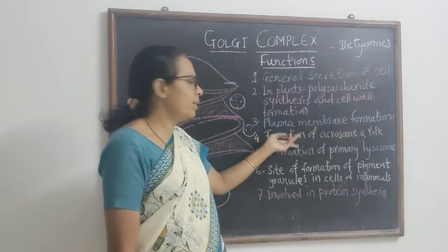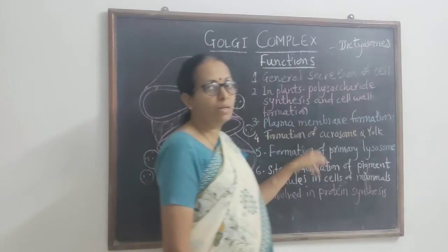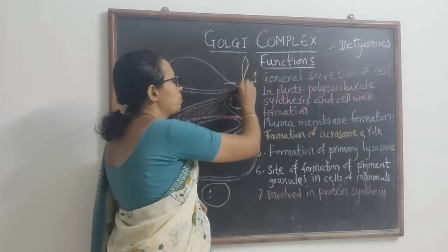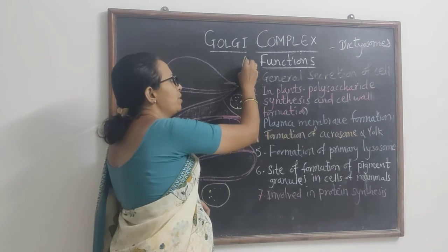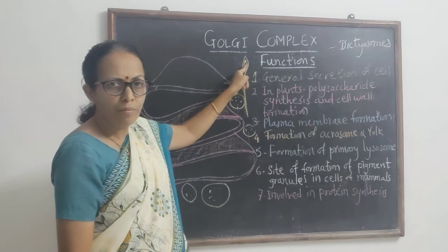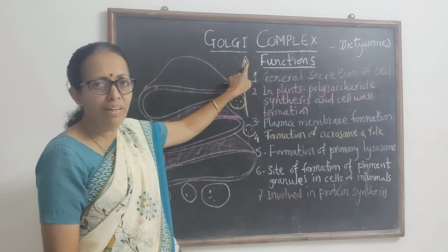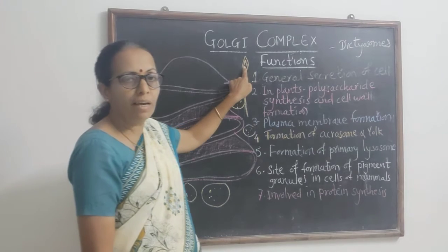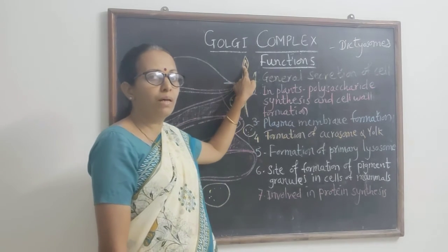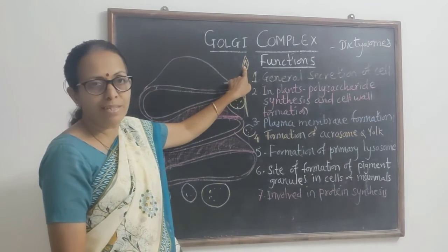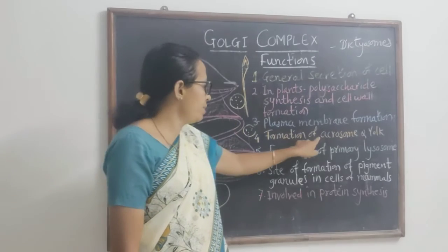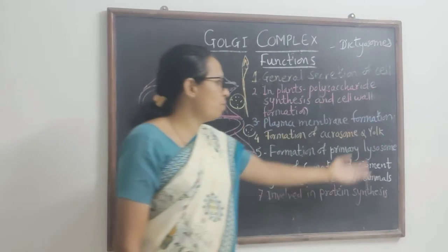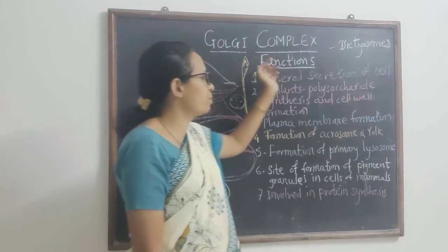The fourth, and very important, function is in the formation of the acrosome in sperm. The head region of the sperm has a cap-like structure called the acrosome, which helps in the penetration of the egg membrane during fertilization. This acrosome contains enzymes like hyaluronidase, which dissolve the membrane of the egg. The acrosome is formed by the Golgi complex. Additionally, yolk granules in the egg are also synthesized by the Golgi complex.